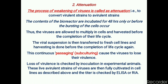Passaging causes the viruses to lose their virulence. Loss of virulence is checked by inoculation in experimental animals such as guinea pigs or rabbits, which are observed for the development of any significant clinical symptoms. These live attenuated strains of viruses are then fully cultivated in cell lines as described under the production of Salk vaccine. The titer of the viruses is checked frequently by tests such as ELISA or RIA.